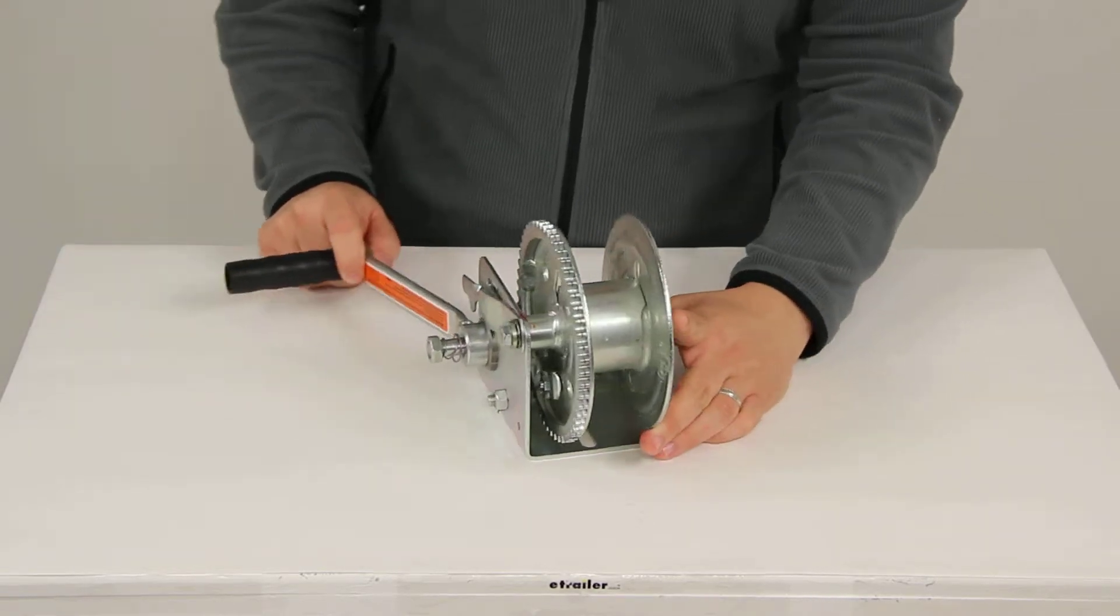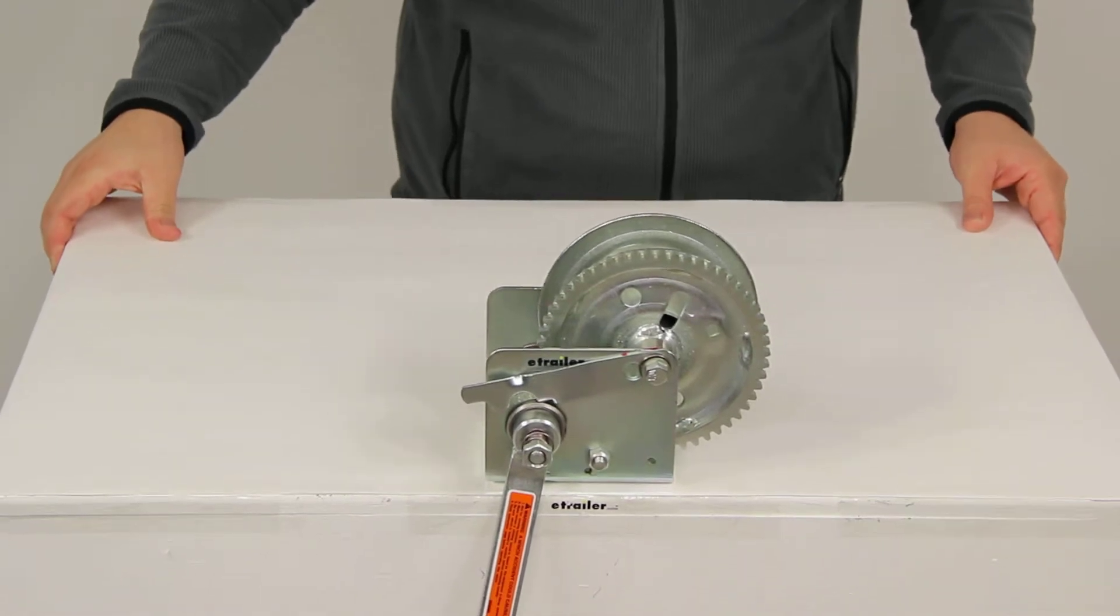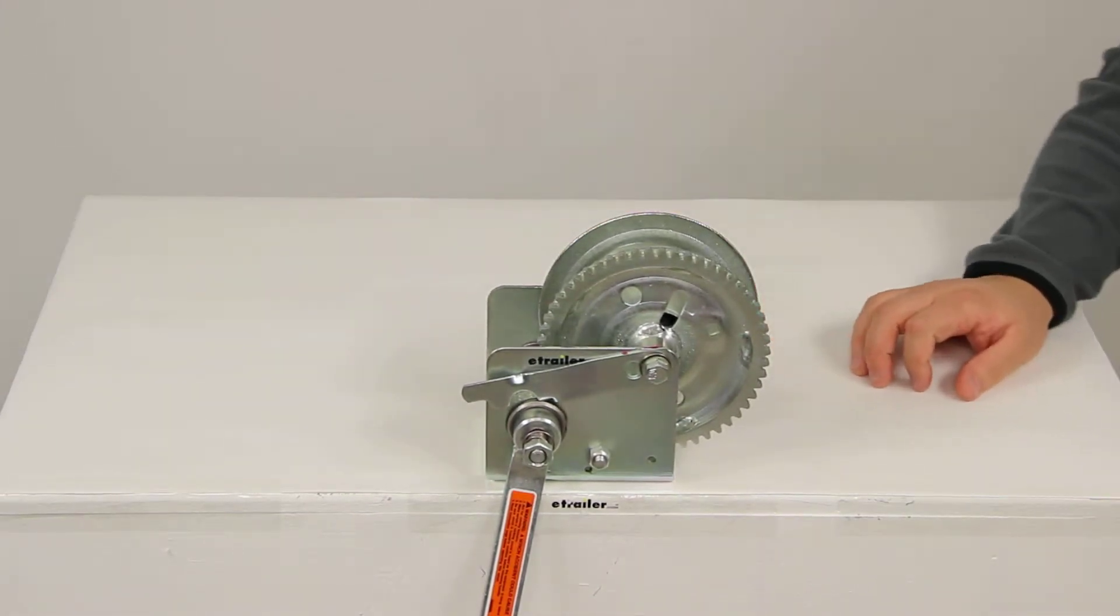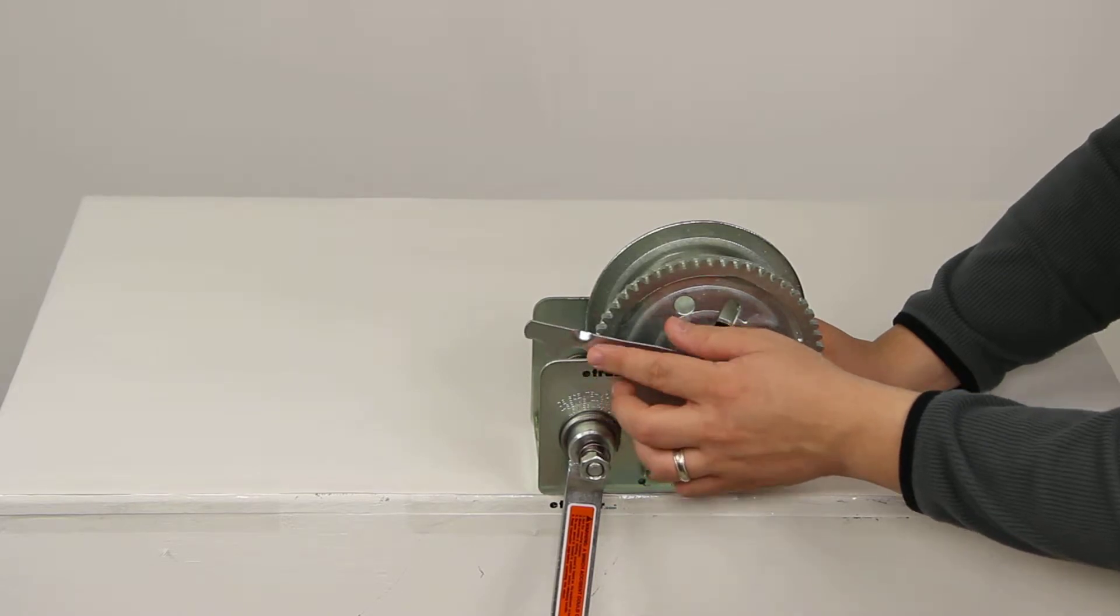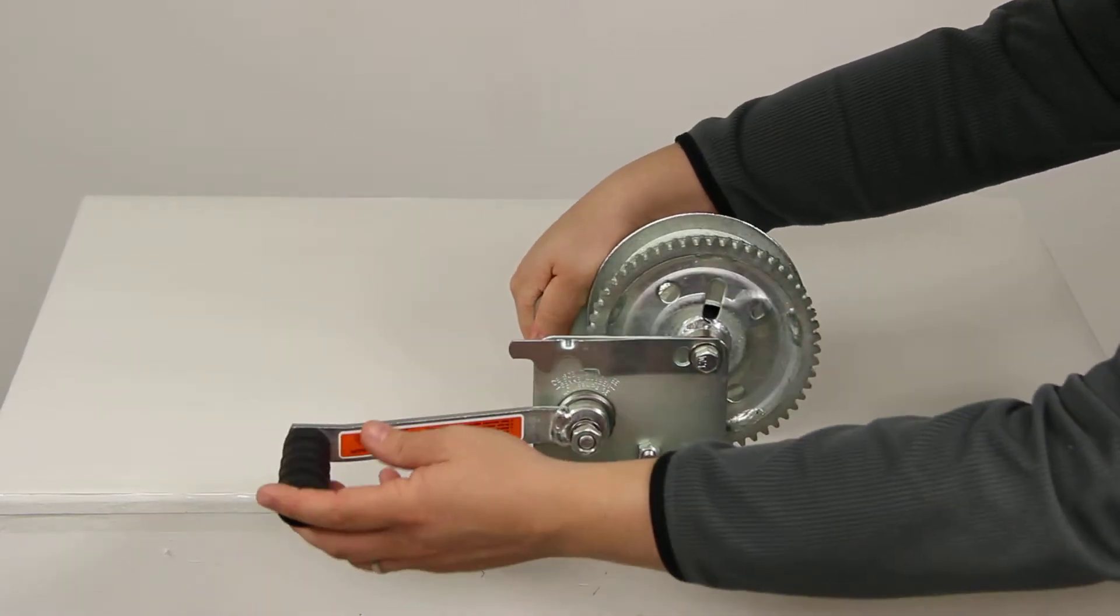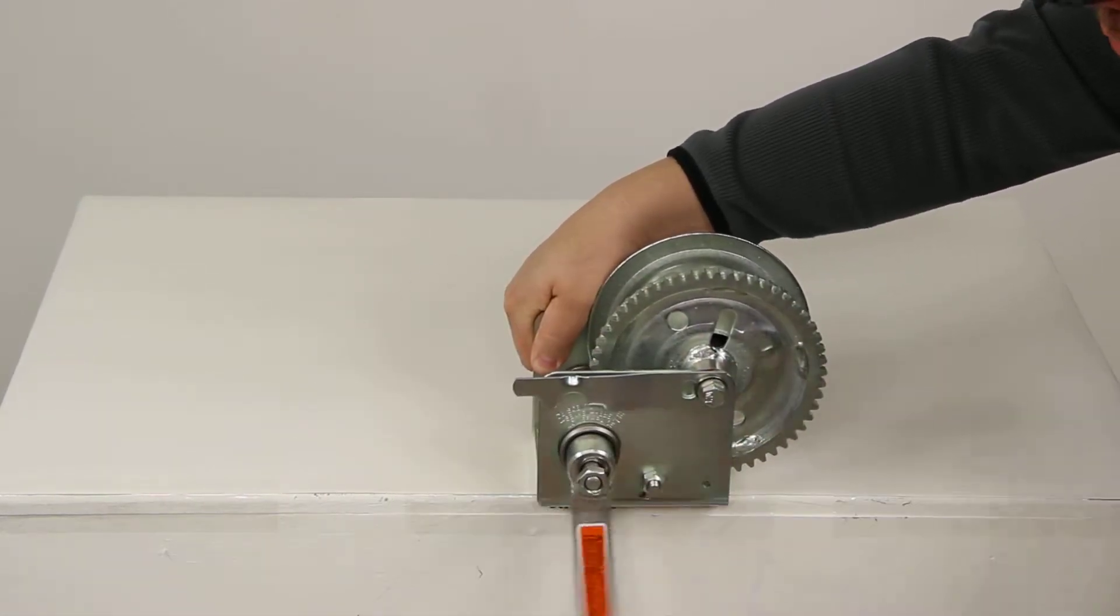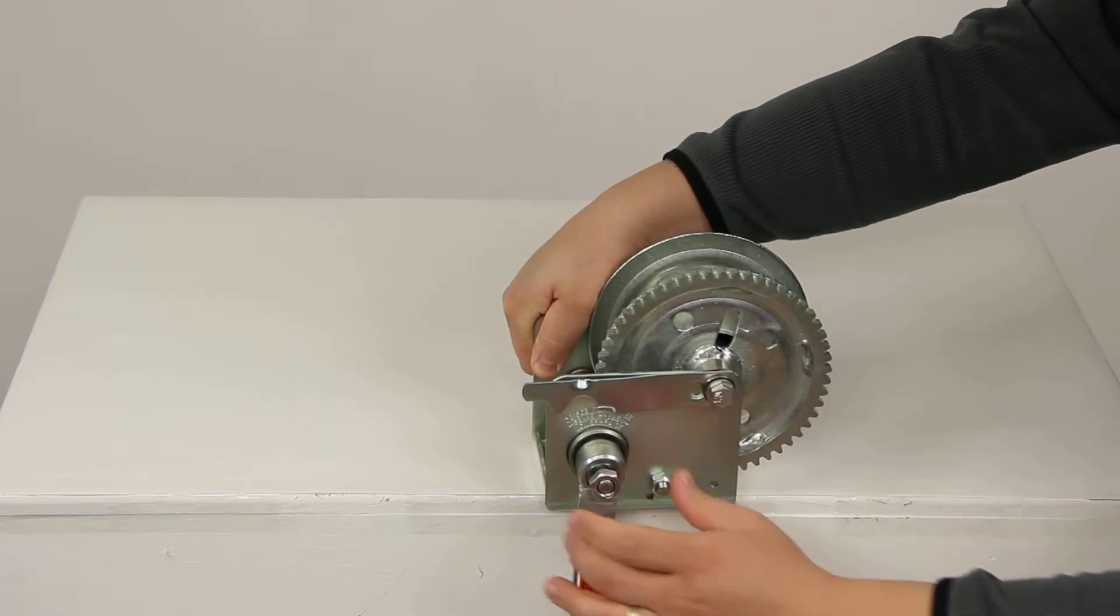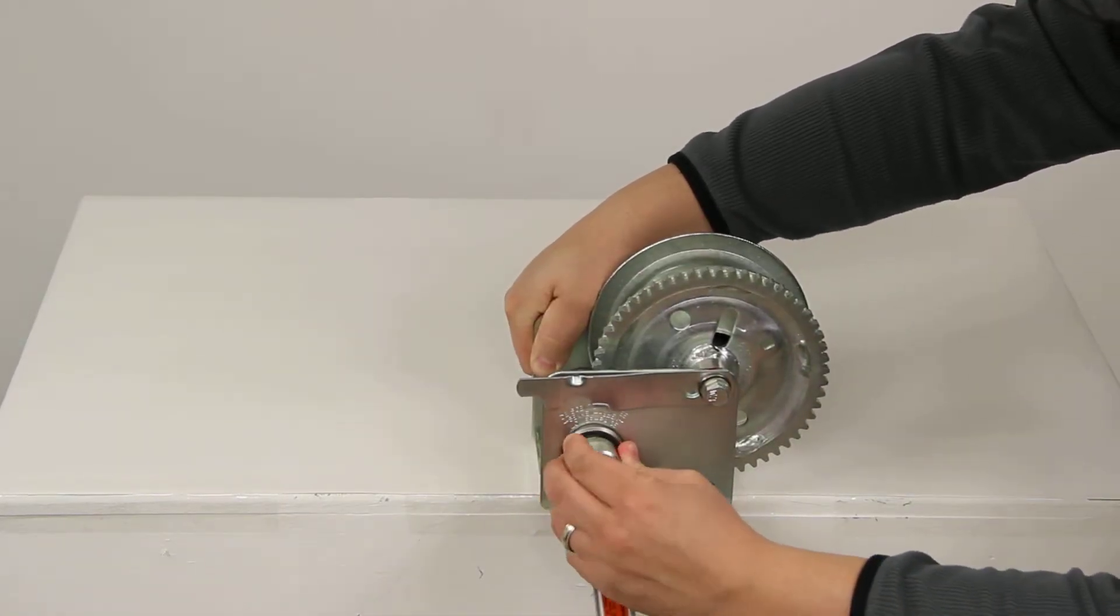I just want to show you real quick how this works. So to engage the freewheel lever, what we need to do is we would need to back this off. So the handle is threaded onto a bolt so we can just back that off a little bit, let the spring engage it so that way we can scoot it out as necessary.